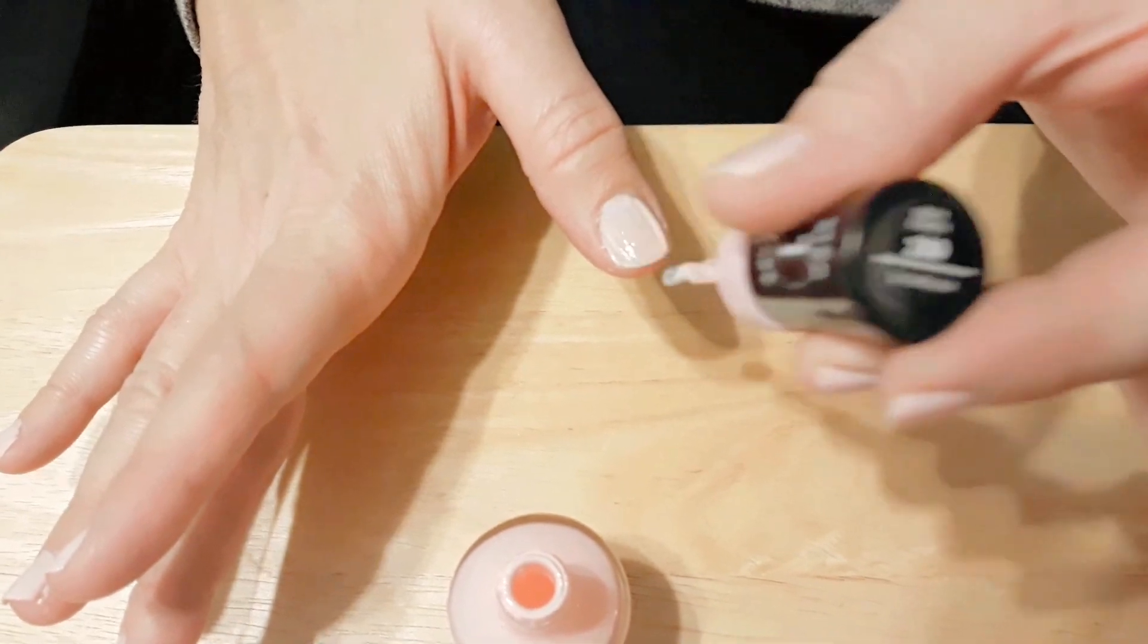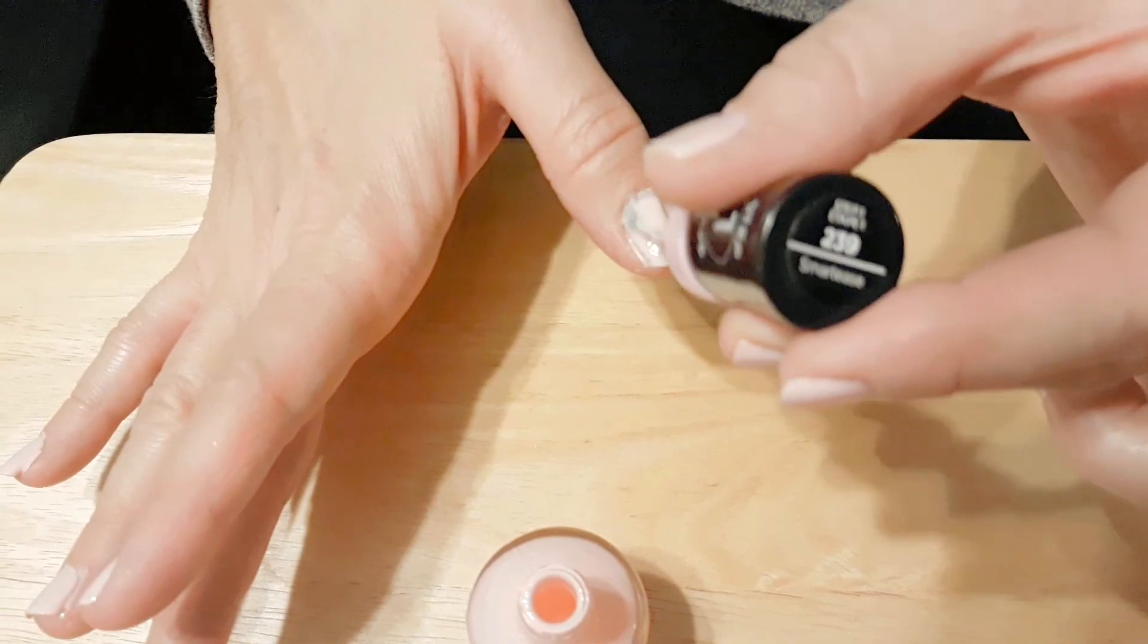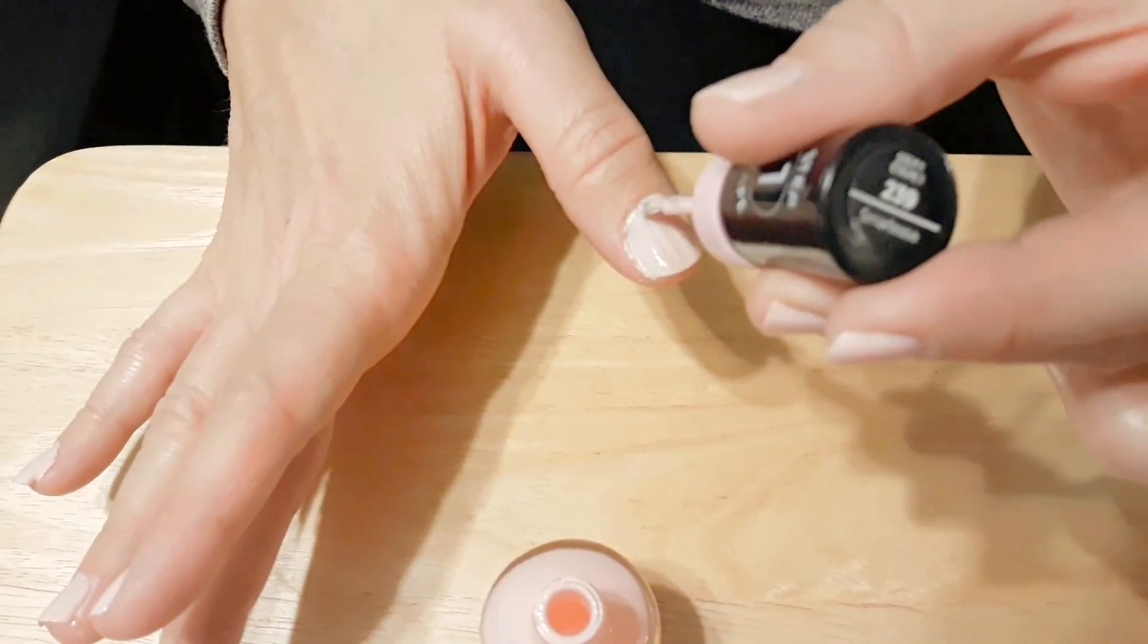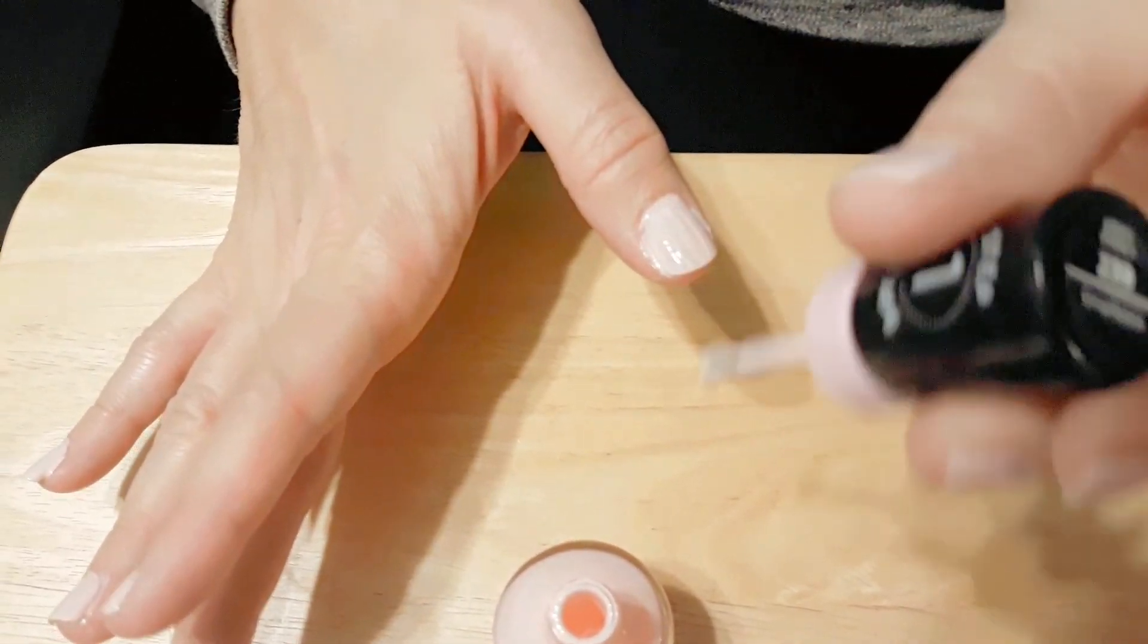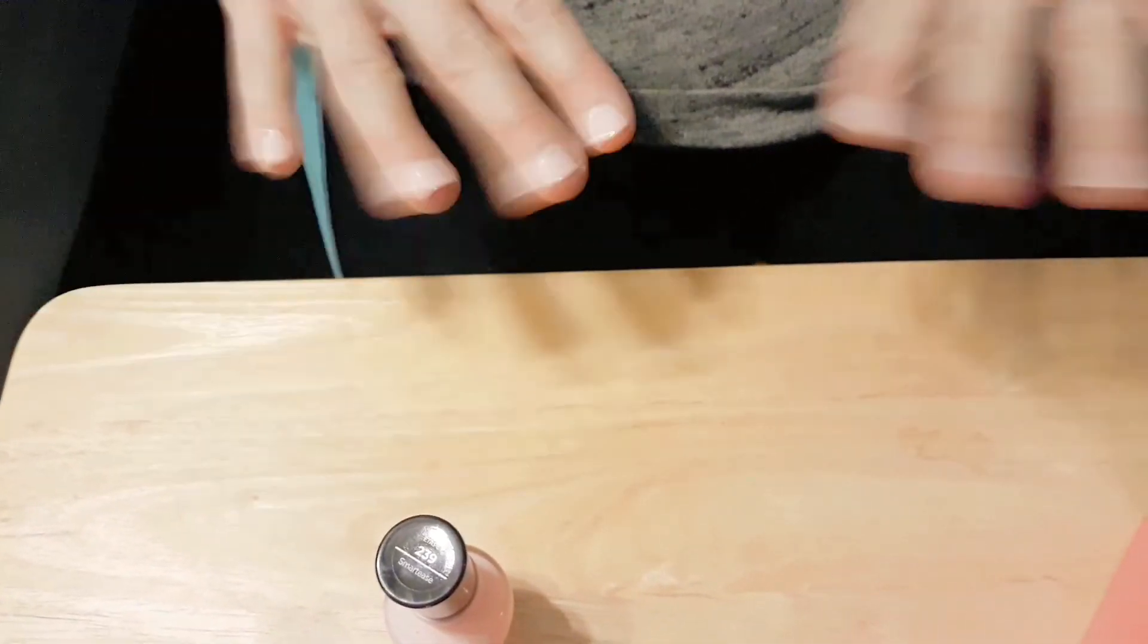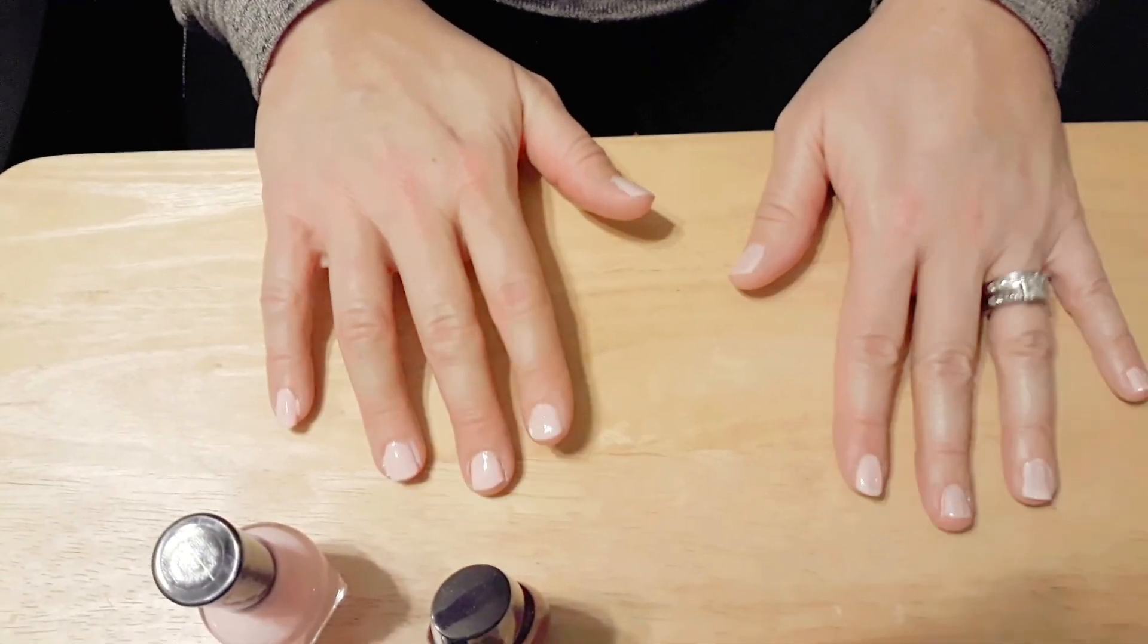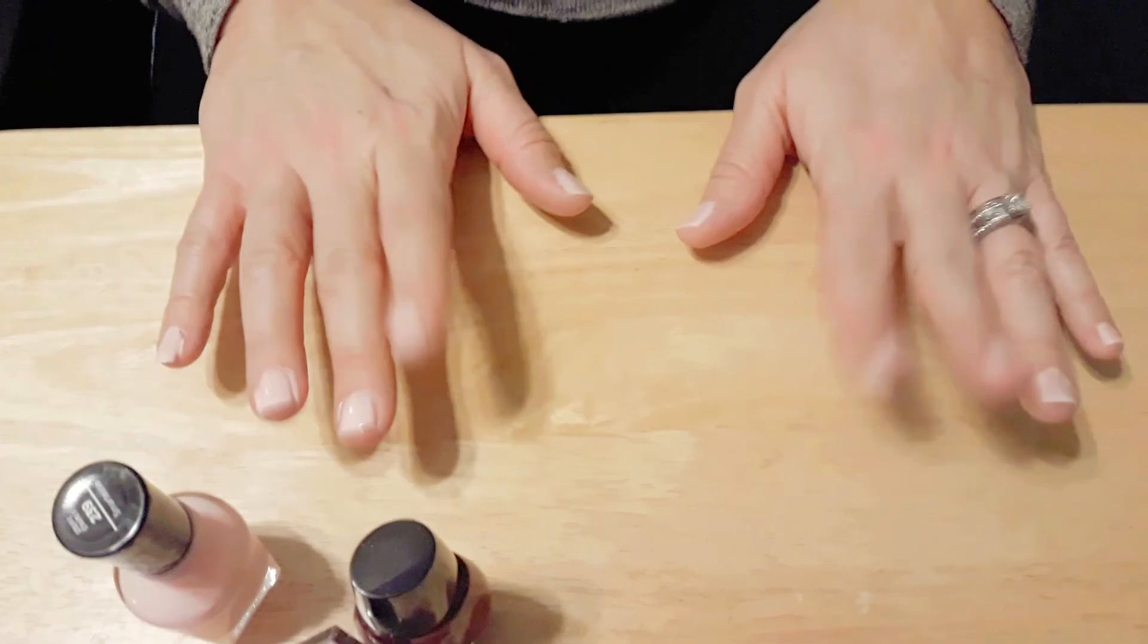We just got to make sure they dry very good, so we don't get any smudge marks or anything. We'll have to put the clear coat on after they dry. Okay, let's give it a little air dry here. We're going to air dry them a little bit. All right, we've got our first coat. Now we're going to do our second coat.